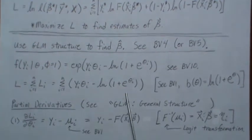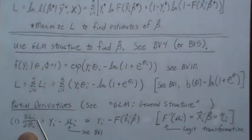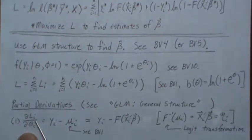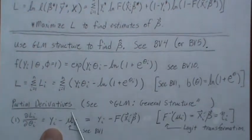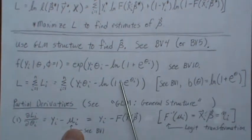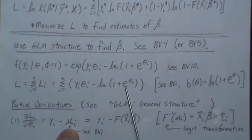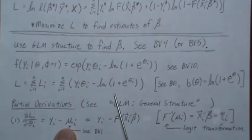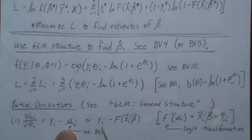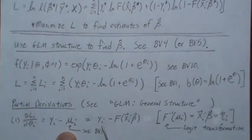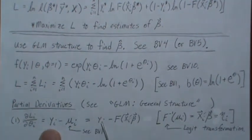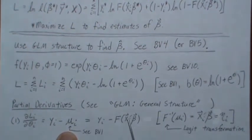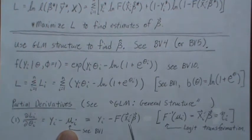Let's start taking partial derivatives that we need to maximize this. First of all, it's in terms of theta. So let's take the partial of L_i. We're going to do a term, then we'll sum it later. So the partial of L_i with respect to theta_i, we get Y_i, and then the derivative of this with respect to theta_i was the mean. You can see BV1 for that. It's the derivative of the log partition ends up being the mean.